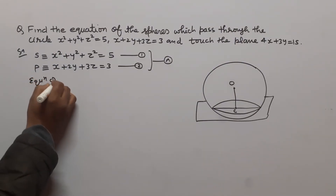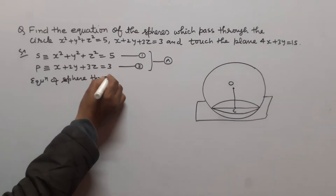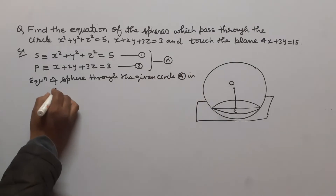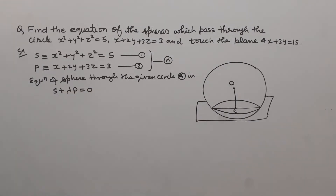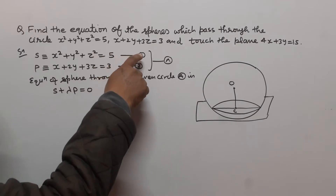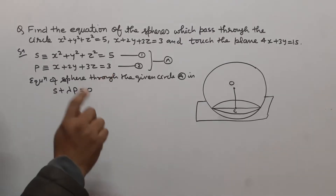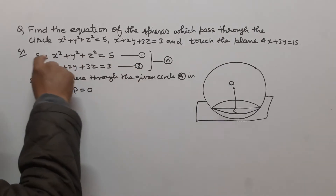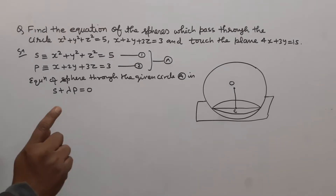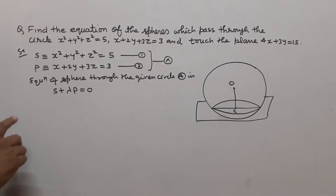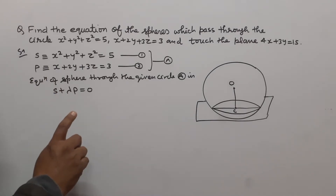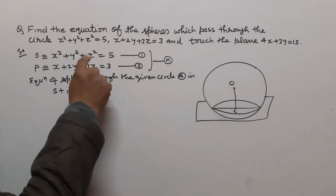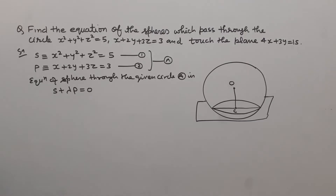We know that the equation of a sphere through the given circle is S + λP = 0. The equation of the sphere passing through the circle can be written as S + λP = 0.